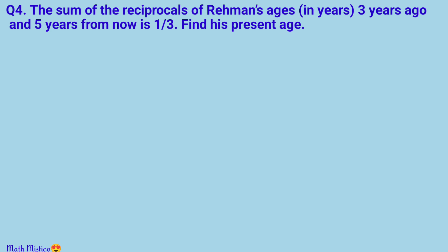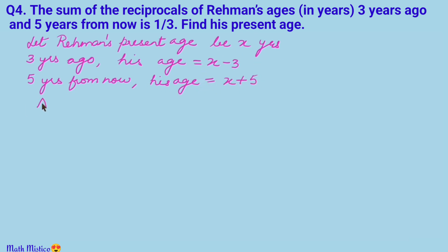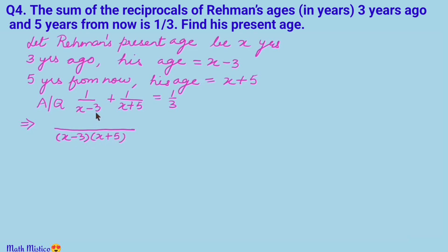The sum of the reciprocals of Rahman's ages 3 years ago and 5 years from now is given, and we have to find his present age. Let his present age be x. Three years ago his age was x − 3, and 5 years from now it will be x + 5. The condition is 1/(x − 3) + 1/(x + 5) = 1/3. Taking the LCM, which is (x − 3)(x + 5), the numerator becomes (x + 5) + (x − 3) = 2x + 2.